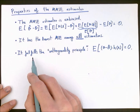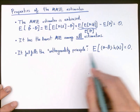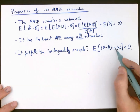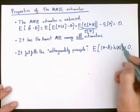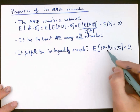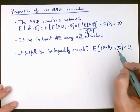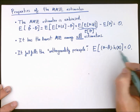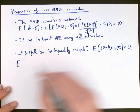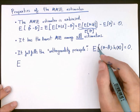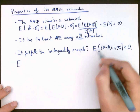The last important property is that the MMSE estimator fulfills the so-called orthogonality principle. The orthogonality principle states that for any function h of the data x used to compute the estimator, if we take the expectation of that function multiplied by the estimation error, the result will be zero. In other words, the estimation error is uncorrelated with any function h of the data x.